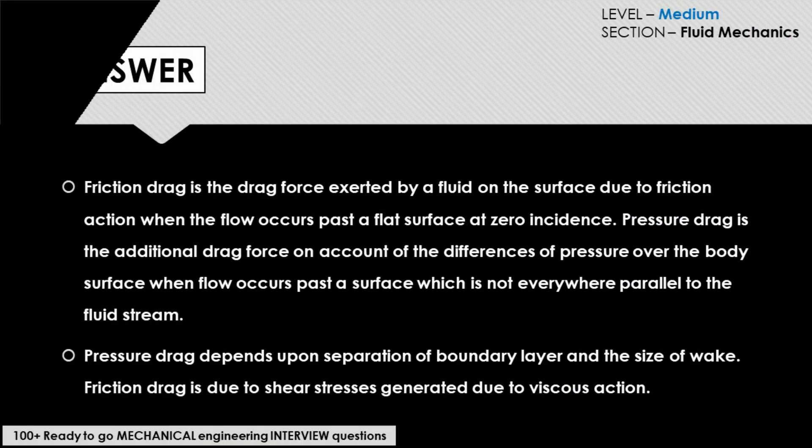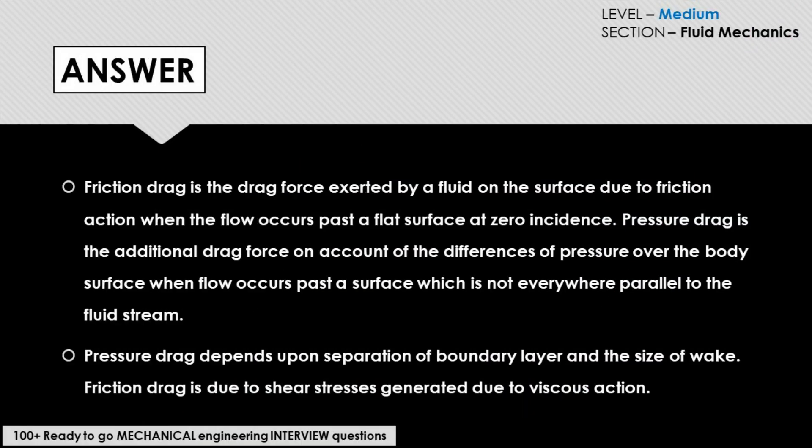The answer: friction drag is the drag force exerted by a fluid on the surface due to friction action when the flow occurs past a flat surface at zero incidence. Pressure drag is the additional drag force on account of the differences of pressure over the body surface. The pressure drag depends upon separation of the boundary layer and the size of the body.